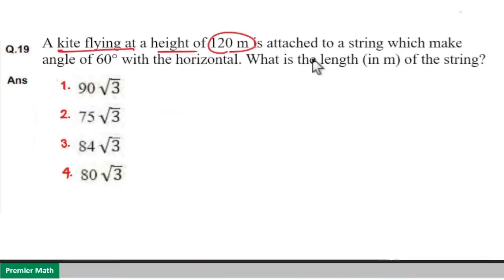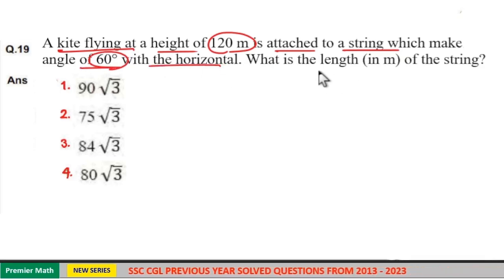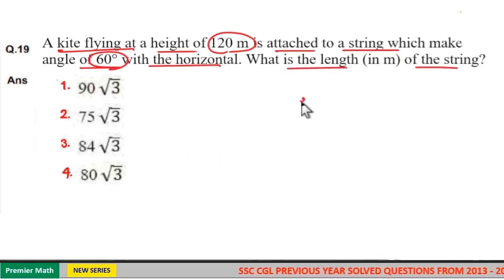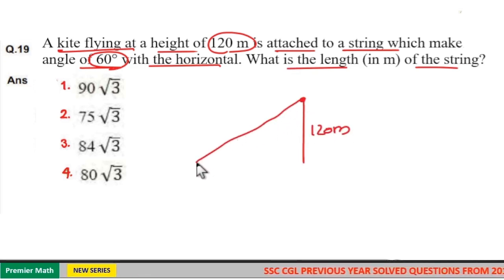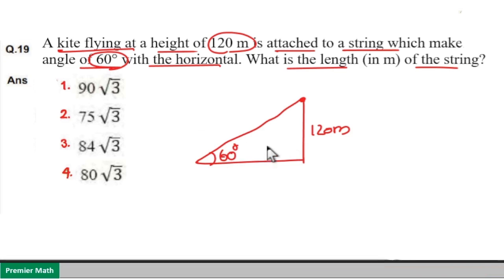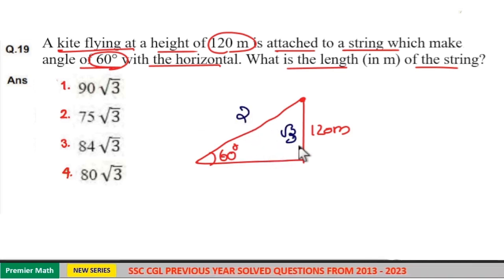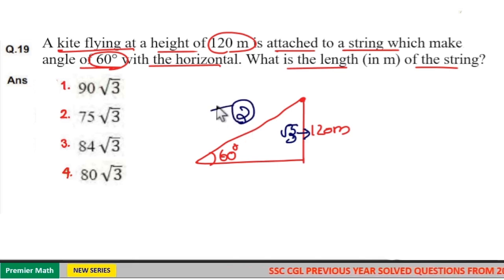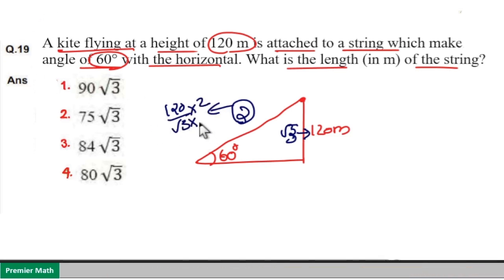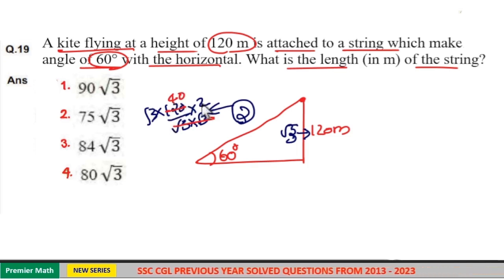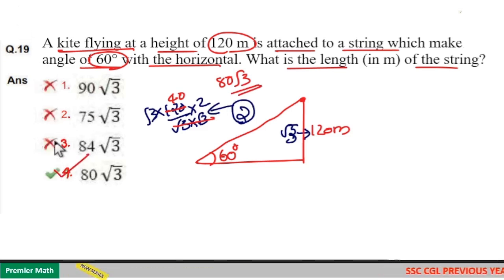A kite flying at a height of 120 meters is attached to a string which makes angle 60 degrees with the horizontal. What is the length of the string? Sin 60 equals root 3 by 2, so opposite to hypotenuse ratio is root 3 to 2. Root 3 part equals 120 meters, so 2 part equals 120 by root 3 into 2. Multiplying numerator and denominator by root 3 gives 120 into root 3 by 3 equals 40 root 3 into 2 equals 80 root 3. Option 4 is your answer.